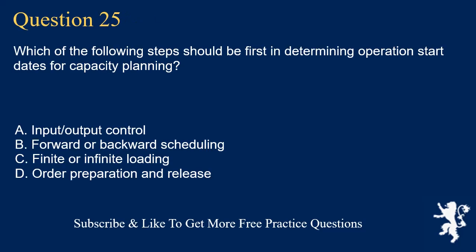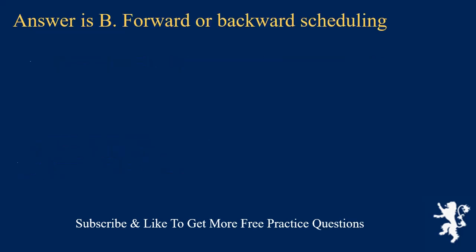Question 25. Which of the following steps should be first in determining operation start dates for capacity planning? A. Input/output control. B. Forward or backward scheduling. C. Finite or infinite loading. D. Order preparation and release. Answer is B. Forward or backward scheduling.